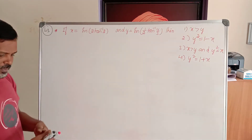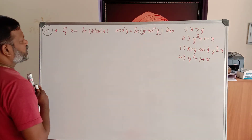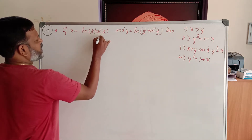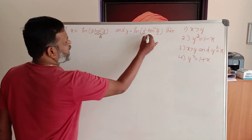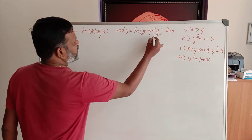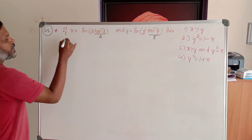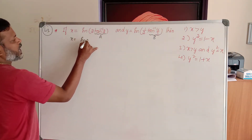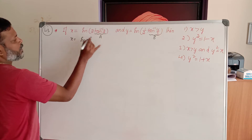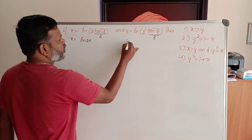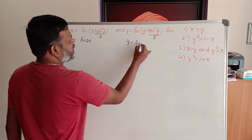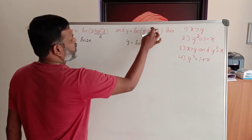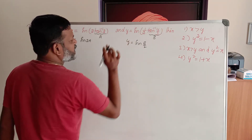It's very simple. Let x equal sin of 2a, where a = tan inverse 2. And y becomes sin of b by 2, because tan inverse 4 by 3 is b, so half of b is b by 2.